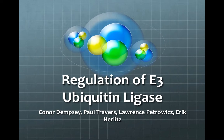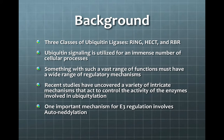From lecture, we all know what an E3 ubiquitin ligase is and have a general idea of what they do. What we did not have a chance to talk about are the different kinds of E3 ligases. Generally, there are three classes: RING ligases, homologous to the E6-AP C-terminus called HECT, and ring-between-rings called RBRs.